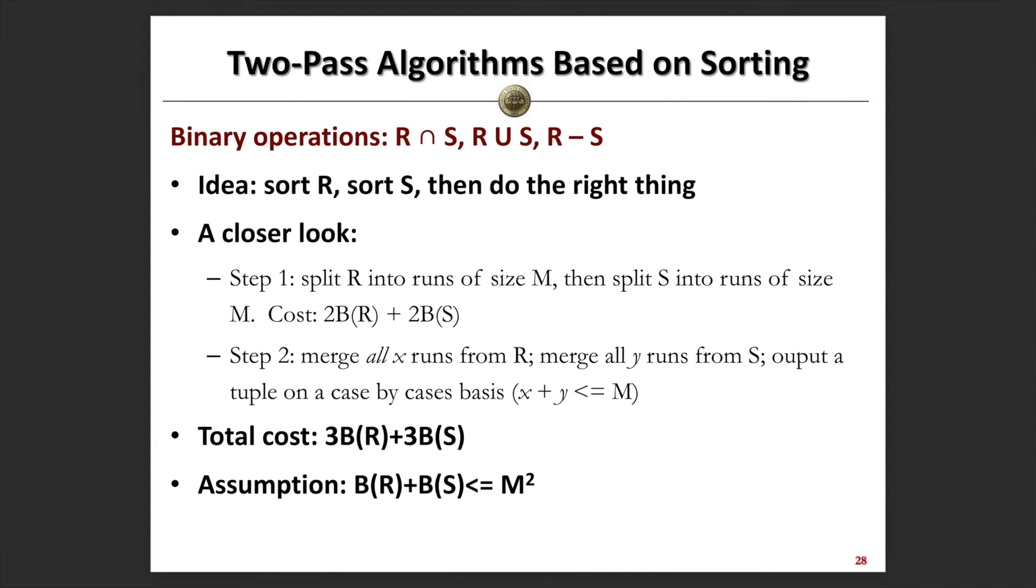In the merge process, we can do the union, difference, and join between two relations effectively. The general cost for this operation based on the two-pass algorithm will be about 3B(R) + 3B(S).